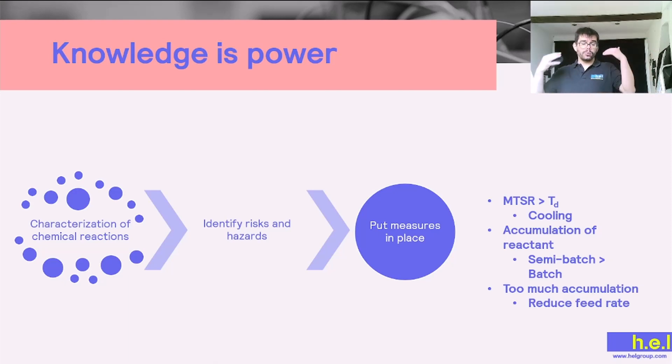Also, it can be the case that we thought that maybe we wanted to add all our reactants into the reactor, and then we observed that no, that's going to generate a huge MTSR, so maybe we want to move from a batch kind of approach to a semi-batch approach in which we are going to slowly feed one of the compounds into the reactor. But it can also be the case that even using this kind of approach, there's going to be too much accumulation of heat, and then what we can do is playing around with the feed rate, and this is what we're going to see on the next slide.